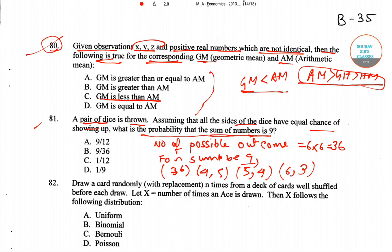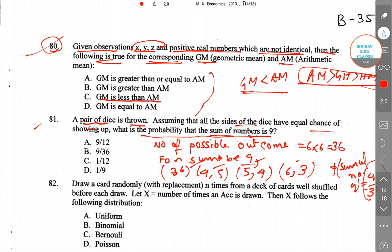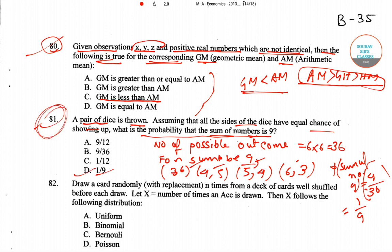So now from here what we can write is: the probability the sum of numbers is 9 will be equals to 4 options out of 36. There are 4 possible ways, which will be equals to 1 by 9. So option D is the right answer for question number 81.